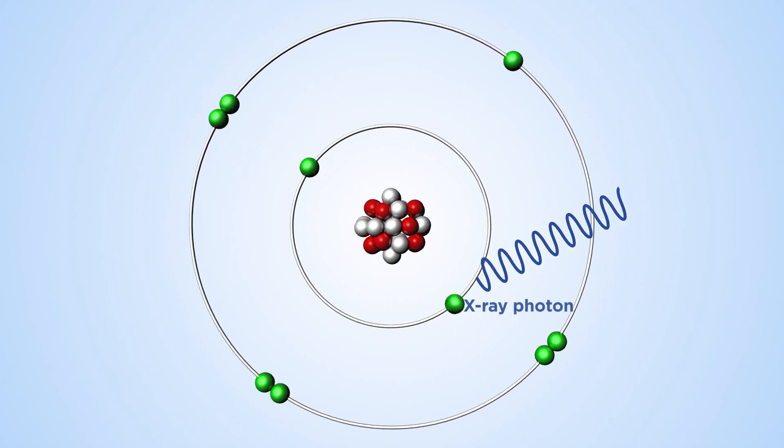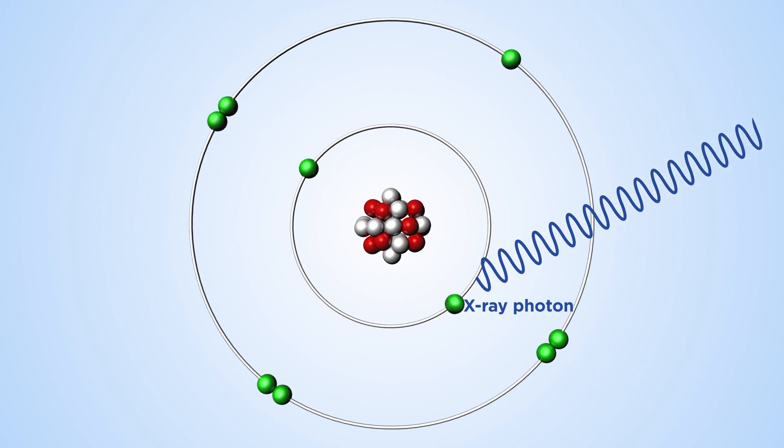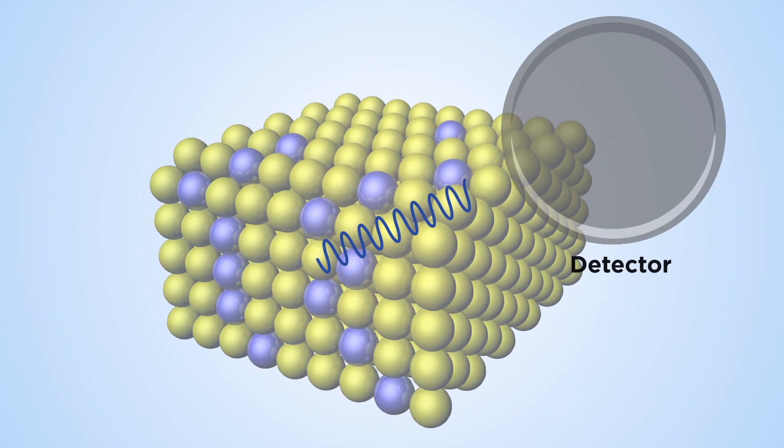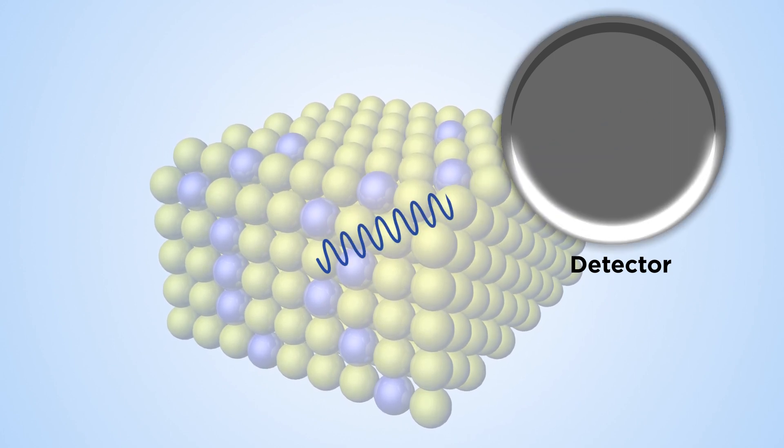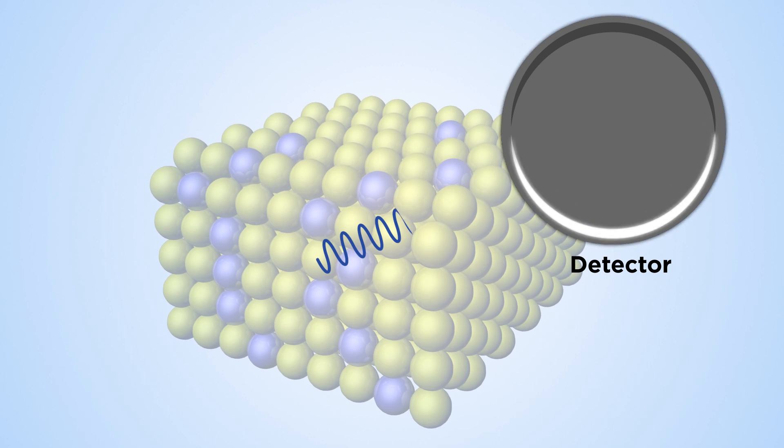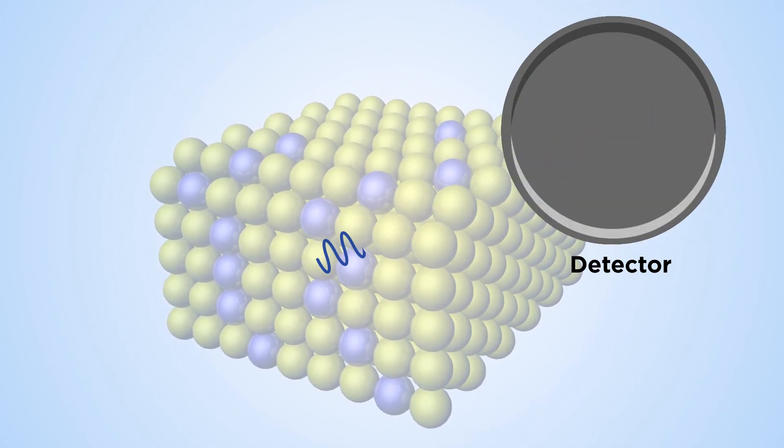As it jumps, this electron produces an X-ray photon, whose energy is highly specific to the element it originated from. By capturing these photons and measuring their energies, researchers can accurately determine a sample's composition. The technique is sensitive enough to detect just a few atoms of one element out of millions.